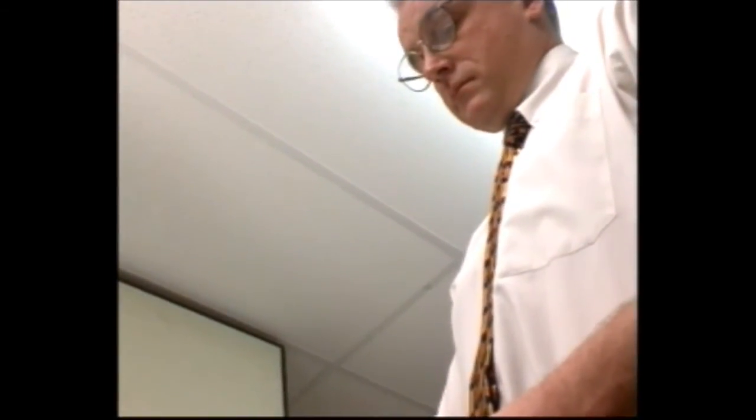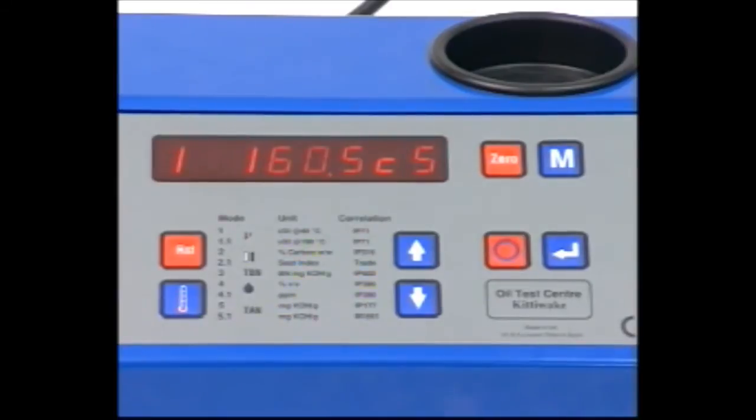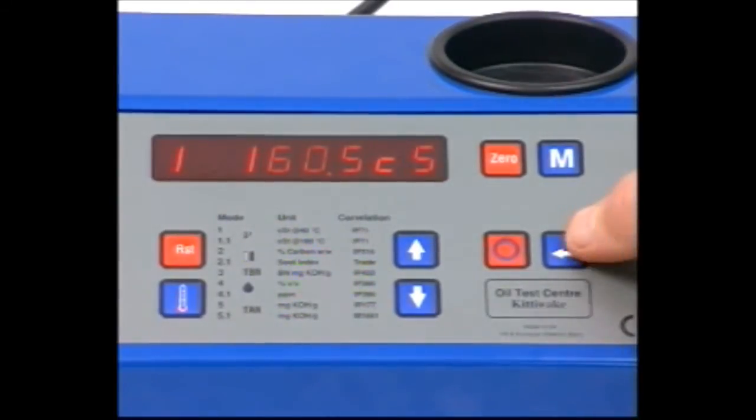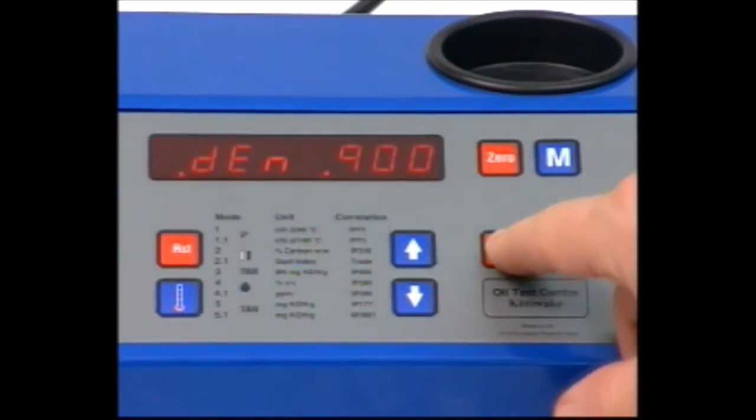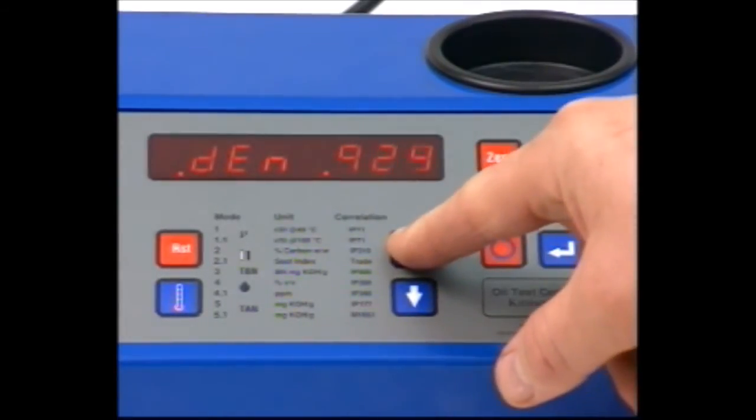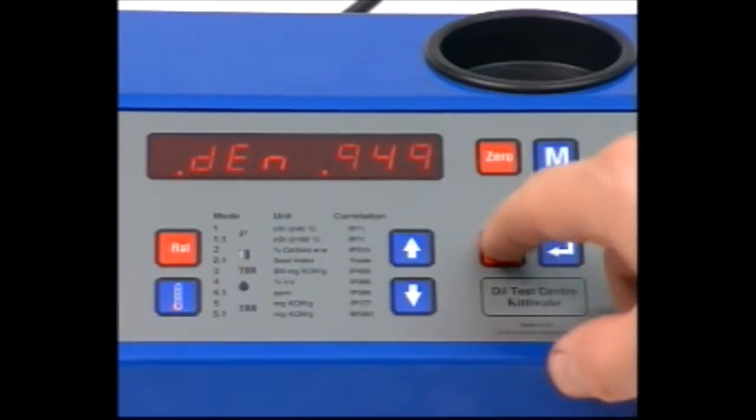If you are testing an oil which has a different viscosity index or density to that of a normal monograde oil, take the viscosity reading as shown. The default setting for oil density used by the viscometer is 0.9. To change this, press Return and enter the new value with the speed and arrow keys.